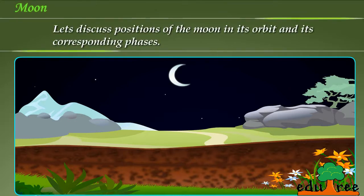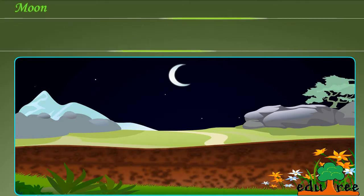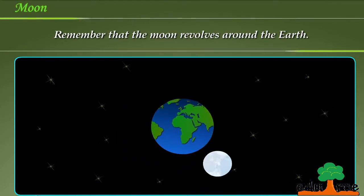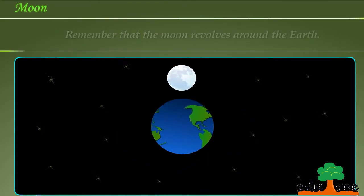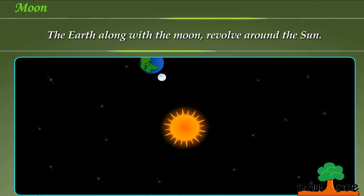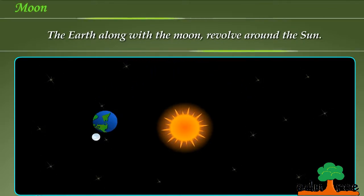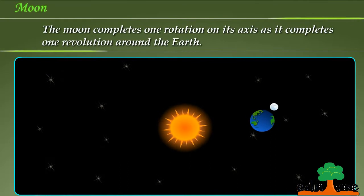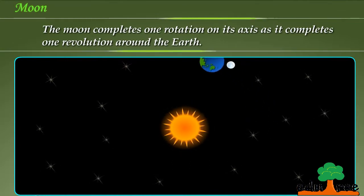Let us discuss positions of the moon in its orbit and its corresponding phases. Remember that the moon revolves around the earth. The earth along with the moon revolve around the sun. The moon completes one rotation on its axis as it completes one revolution around the earth.